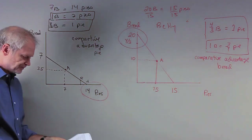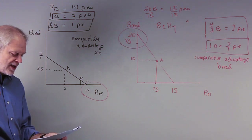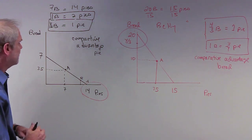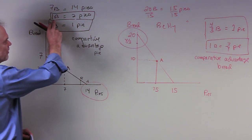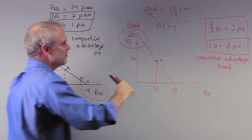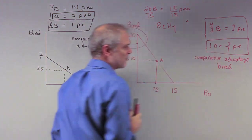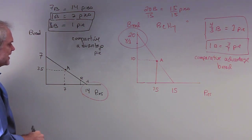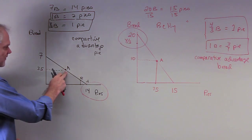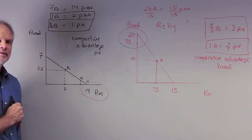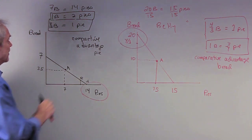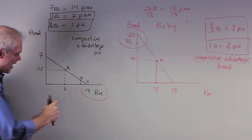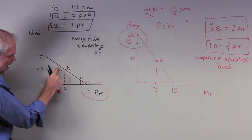So now, if they specialize — Barney in pies, Betty in bread — what price would they trade at? Let me go right to the answer and work back. We know that for Barney, one bread equals two pies. So let's say Barney wants another bread — what would he have to pay? Every time Barney wants another bread, he has to give up two pies to get that extra bread.